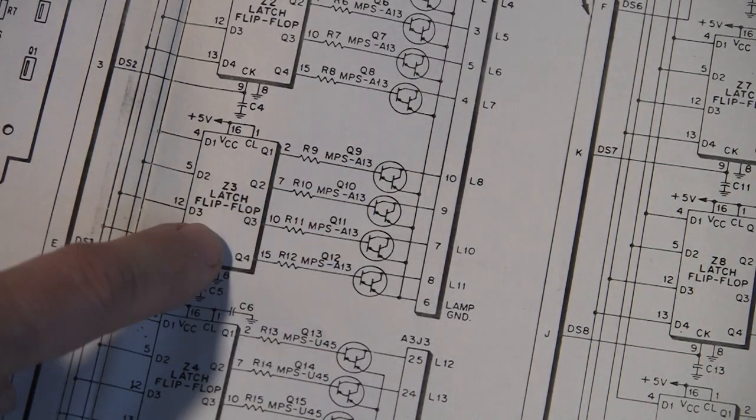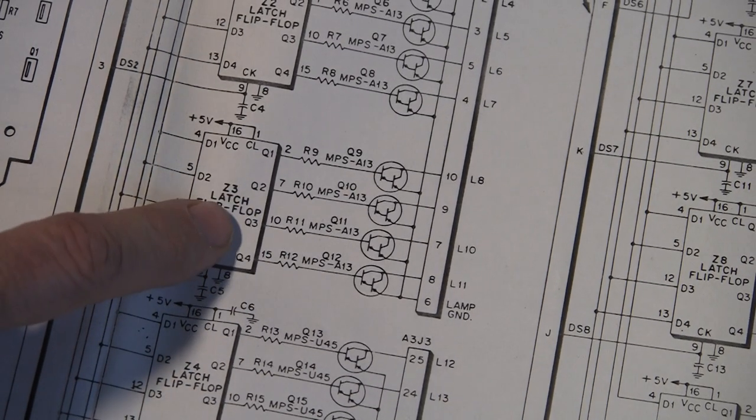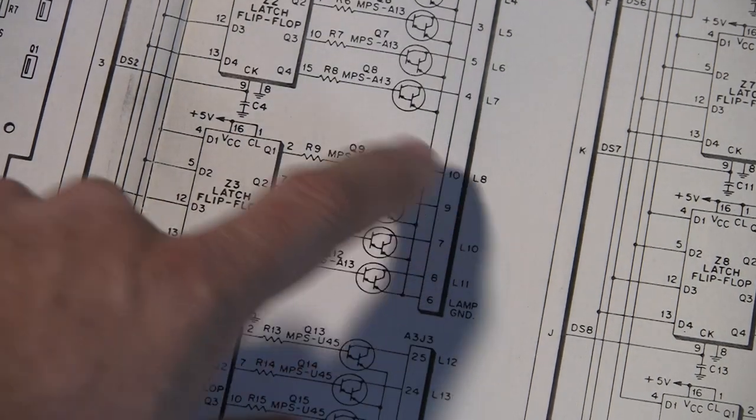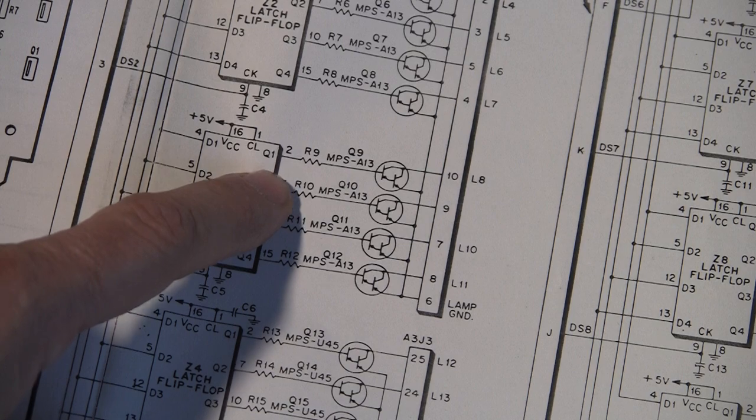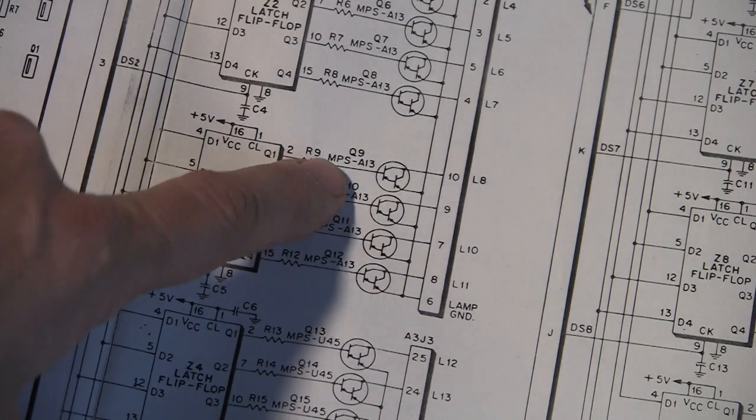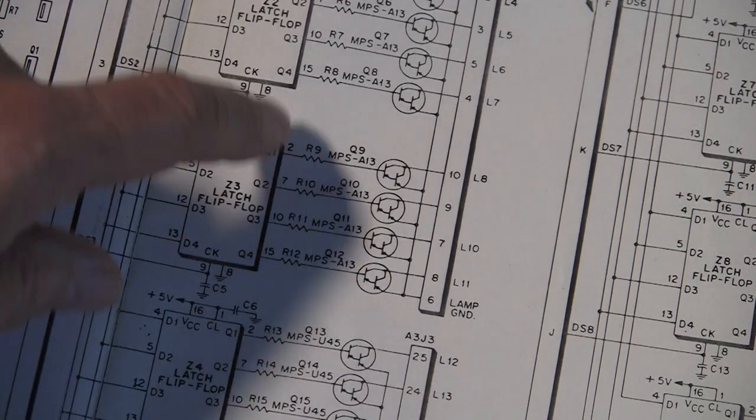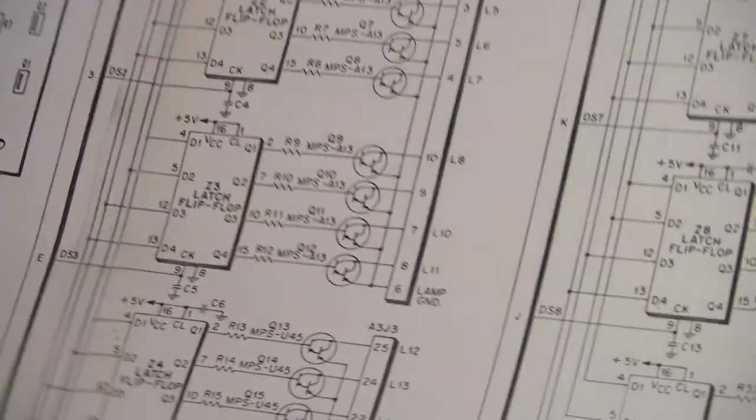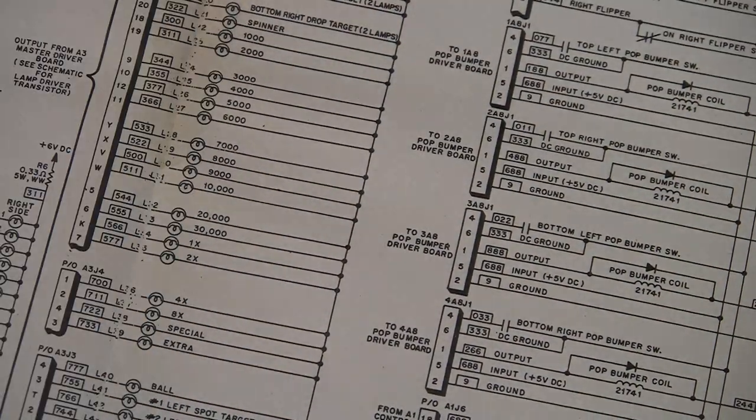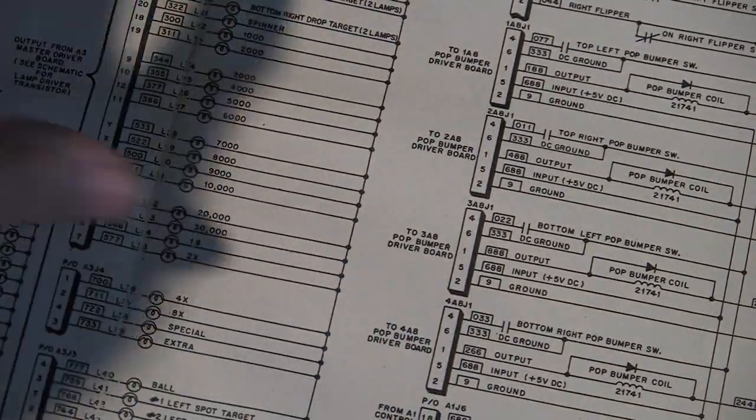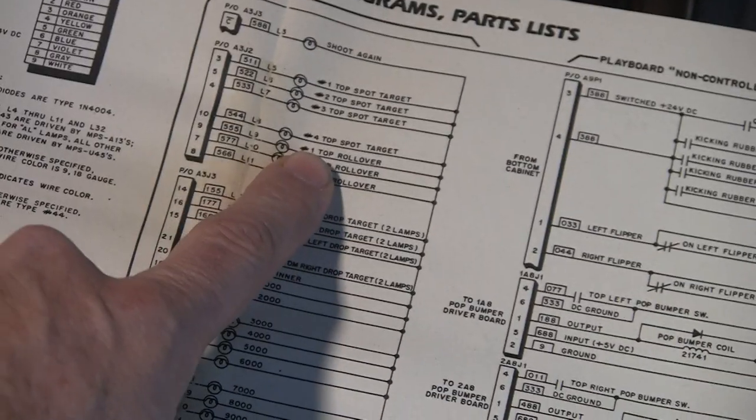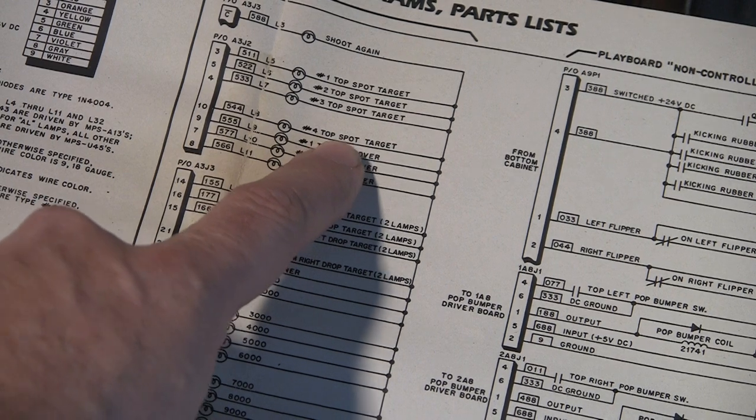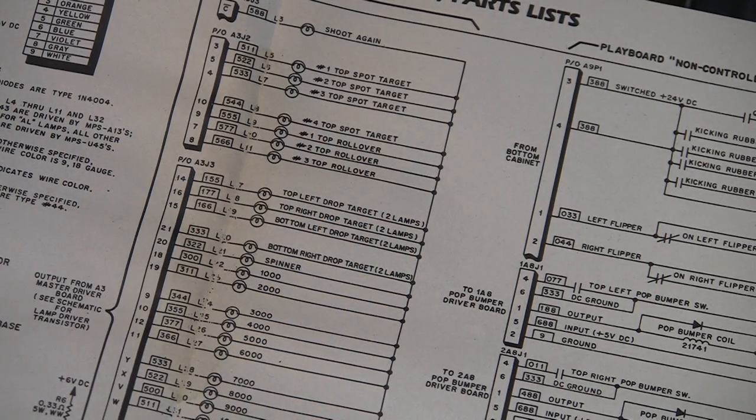So we see there's a common thing going on with all three of these lights. But there's a fourth light in there that's light eight. Now, I didn't notice any other light that was off. So that kind of, if this light is working, then there could be another cause. So let's look up light eight. Light eight is number four spot target. So number four top spot target. So that's the stand-up target on the upper bank. All right. So let's go back over to the game real quick.